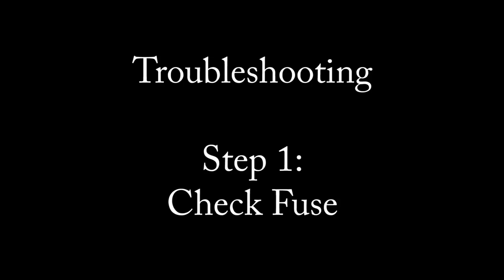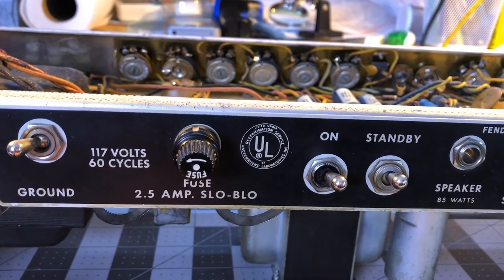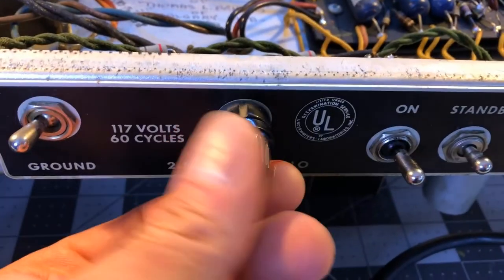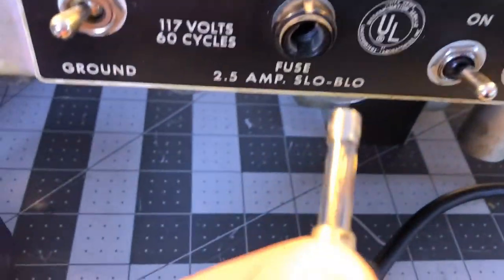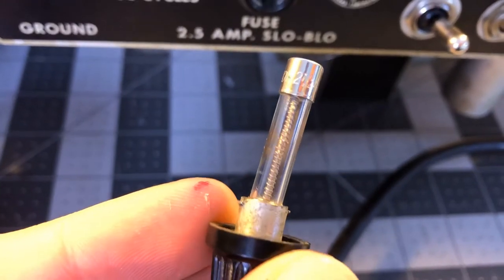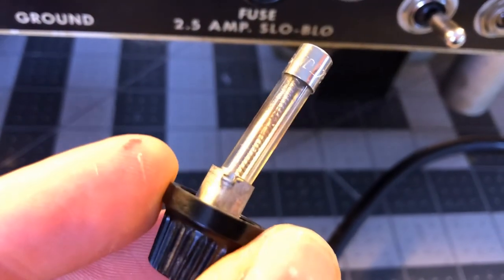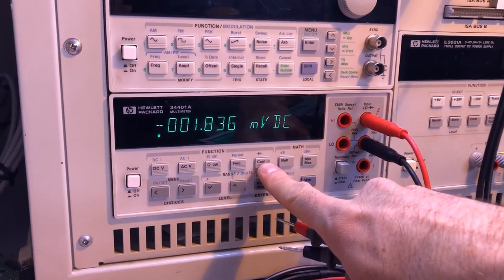We will go over a few troubleshooting steps. We will start by checking the fuse and see if anything is going wrong here. As we can see, the usual silver coating on the glass is typical after the slow blow filament breaks.